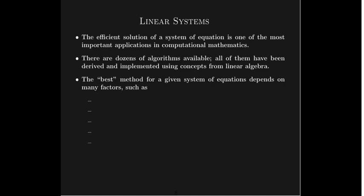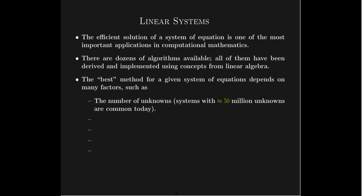Which algorithm is going to be used depends on many factors. For example, the number of unknowns. Systems with 50 million variables or 50 million unknowns are quite common today. And within two or three years, hundreds of millions of unknowns will be common. People have already solved systems of equations with over a billion unknowns.